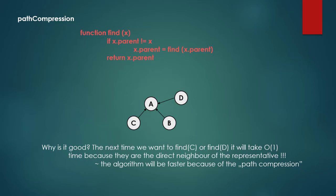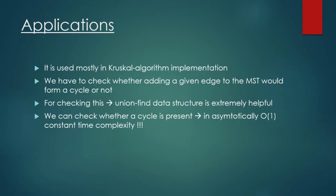To summarize: the next time we want to find C or D, it takes O(1) time because they are direct neighbors of the representative. The algorithm is faster because of path compression as well as union by rank.